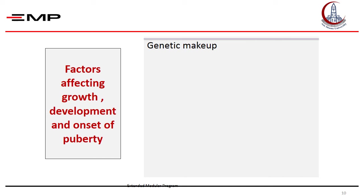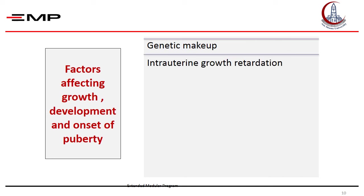So, the child of short parents will also be short, and this is called familial short stature. Most children with intrauterine growth retardation will catch up to reach normal height during the first or second year of life, but some of them remain short for age and need growth hormone replacement, and some may also suffer from other endocrine disturbances.